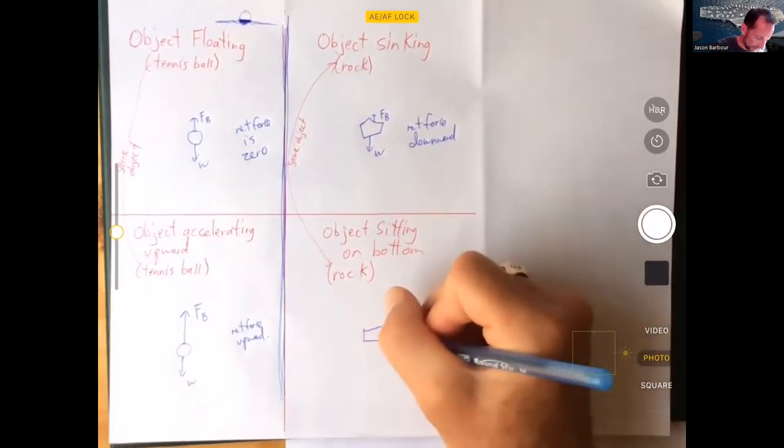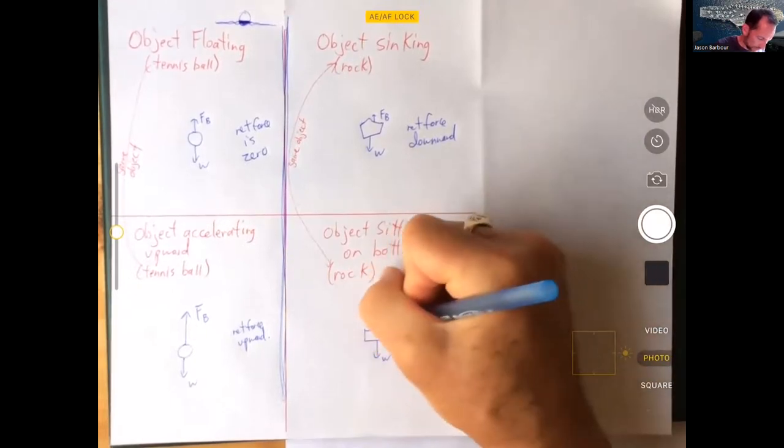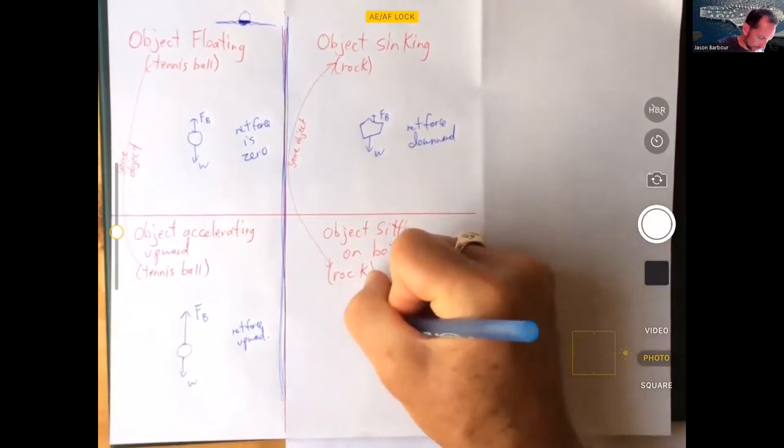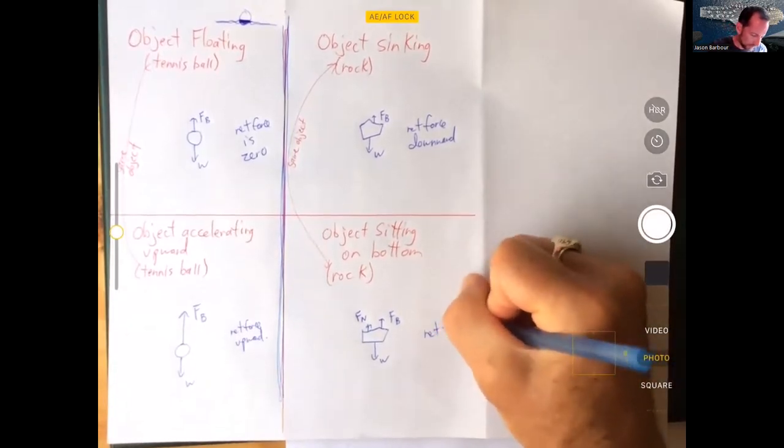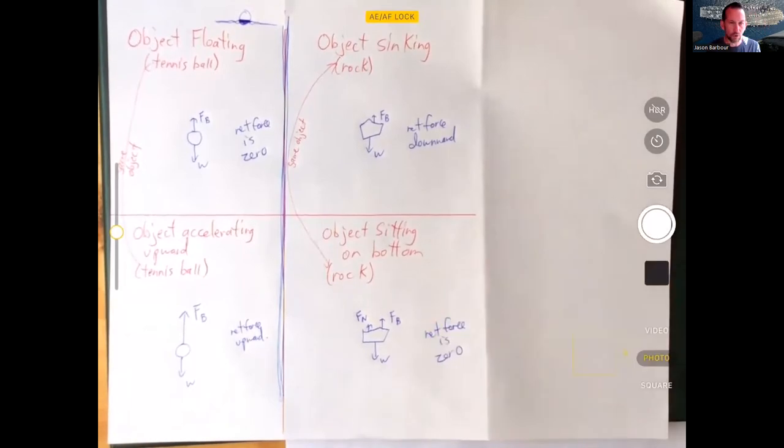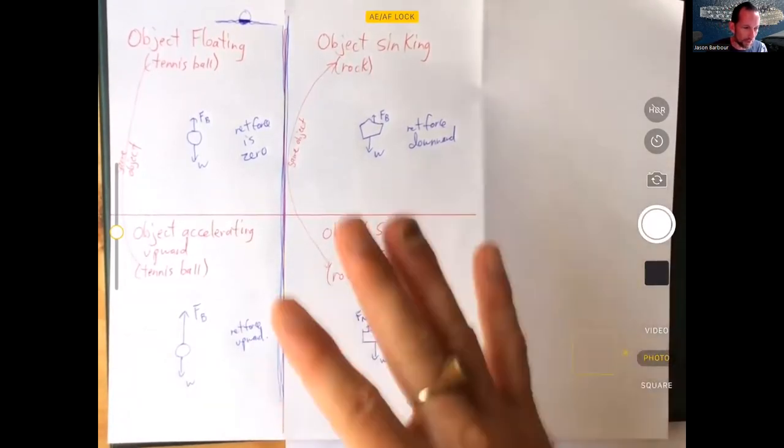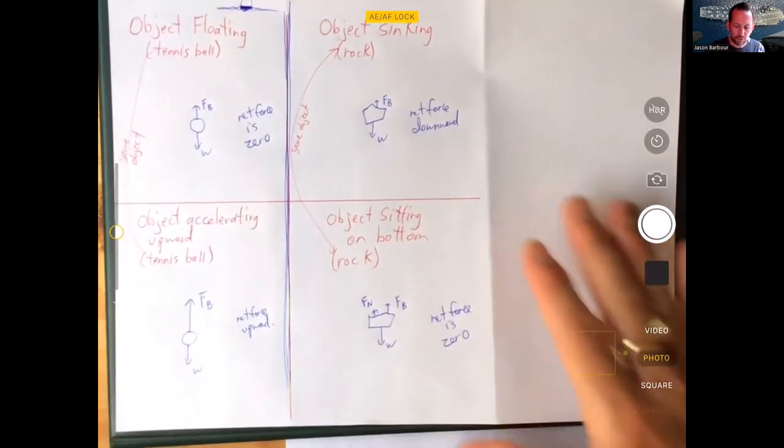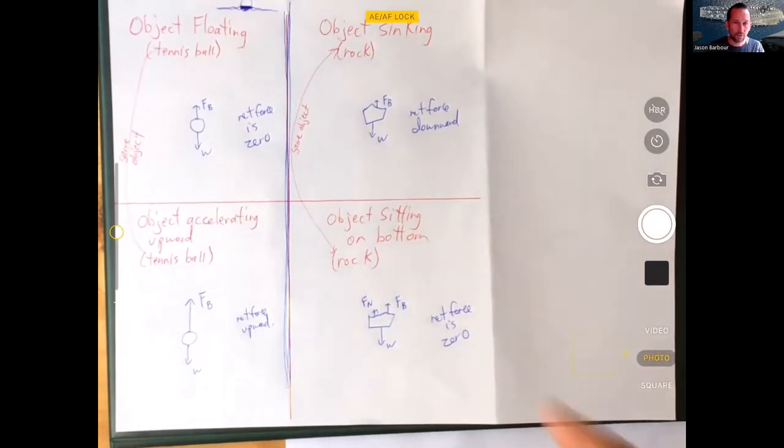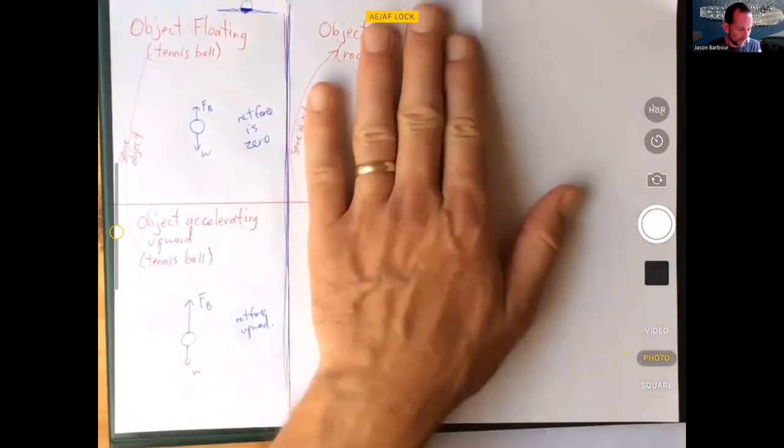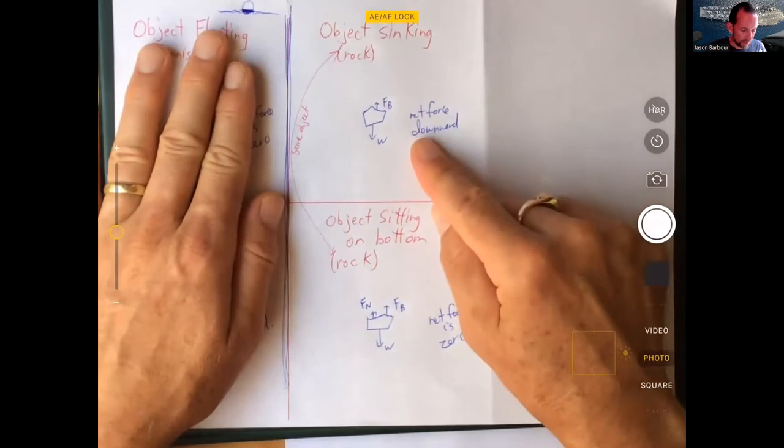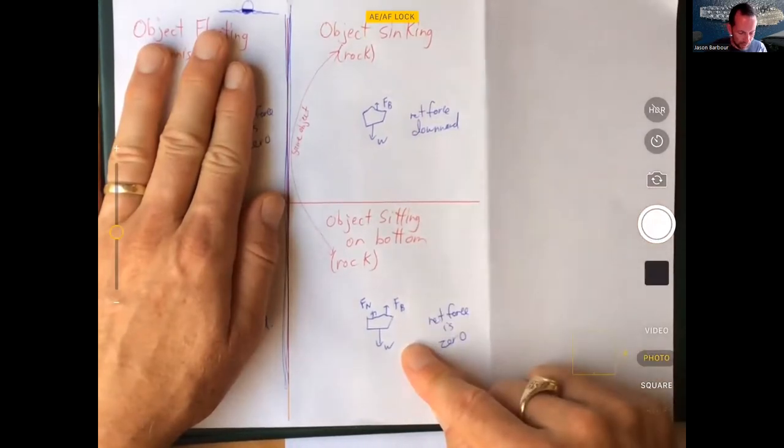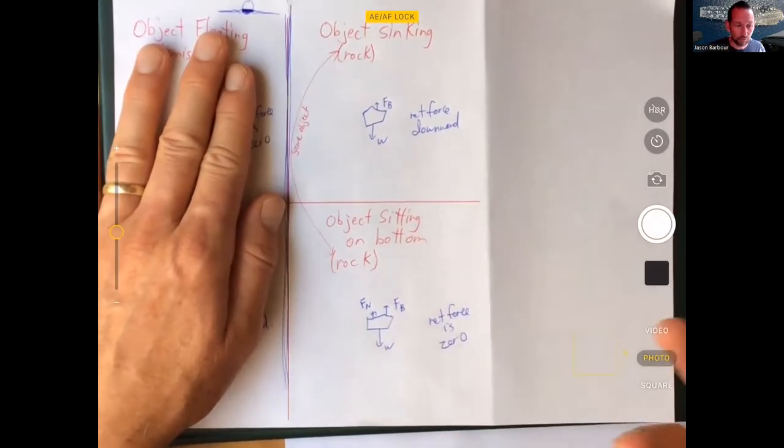It gets to the bottom. Now, there's weight. There's still the buoyant force. But there's also what? It's sitting on the bottom. So there's a normal force. And the net force is now zero. So these free body diagrams really kind of give you a really good idea of how to draw free body diagrams when buoyant force is involved. Four different scenarios. And you can see, again, how this free body diagram would change into this one once it hit the bottom. And the net force was zero. Now the acceleration zero.